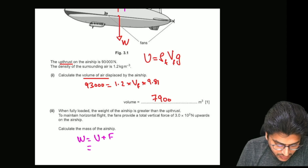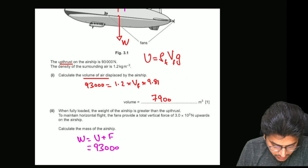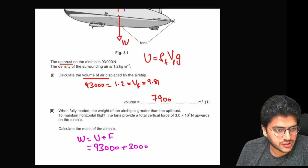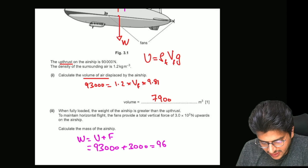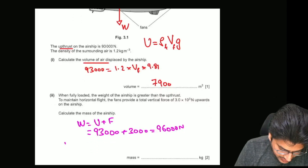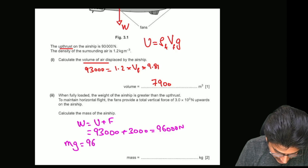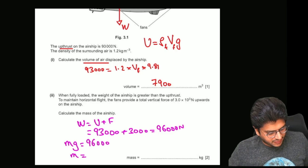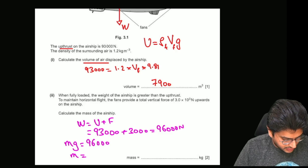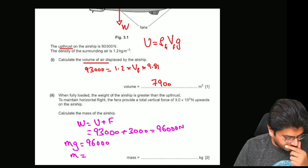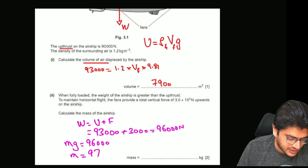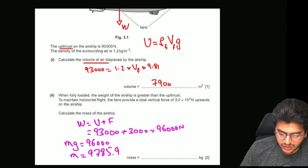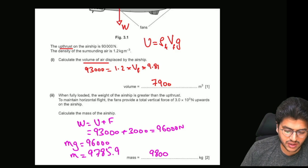Your upthrust was 93,000 Newtons and the upward fan force is 3,000 Newtons. So you get 96,000 Newtons of weight, which is basically Mg. To get the value of M, divide 96,000 by 9.81, and your answer will be 9,785.9, which you can round off to 9,800 kilograms.